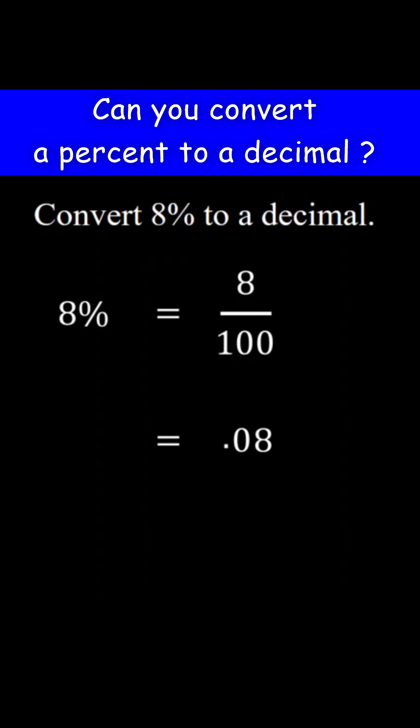So, 8 divided by 100 is 0.08. But usually, when we write decimals, we add 0 before the decimal point. Therefore, 8% in decimal form is 0.08.